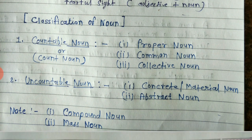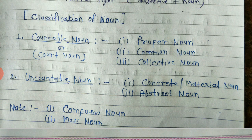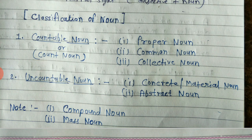Now we see the classification of noun. There are many classifications given by different grammarians. Here we look at the best possible classification. Nouns are divided into two main types: first, countable nouns (or count nouns), and second, uncountable nouns. Under countable nouns there are three types: proper noun — giving information about a specific person, place, or thing; common noun — referring to a common person, place, or thing; and collective noun — referring to a collection of persons, things, or animals.